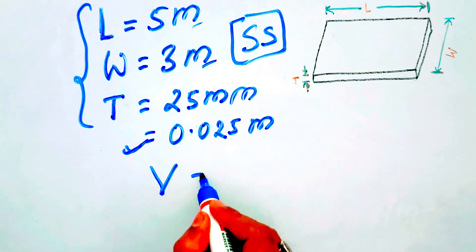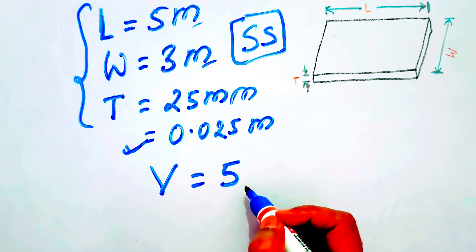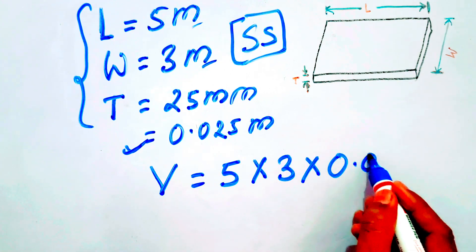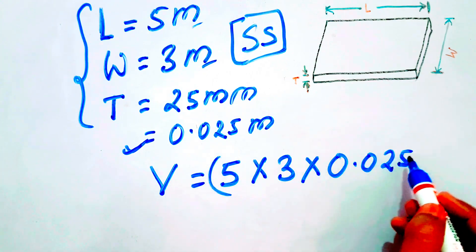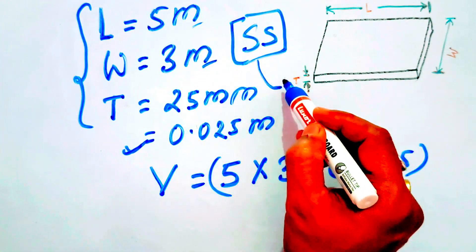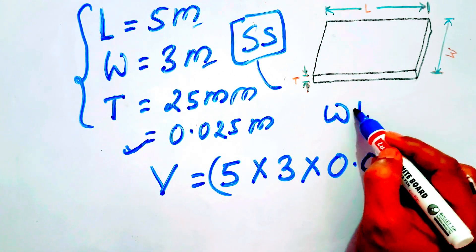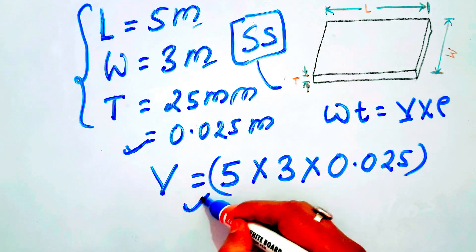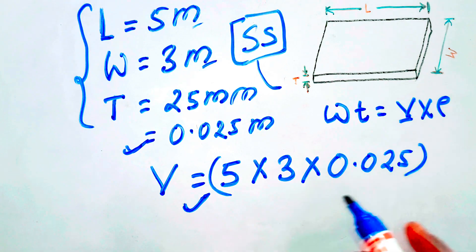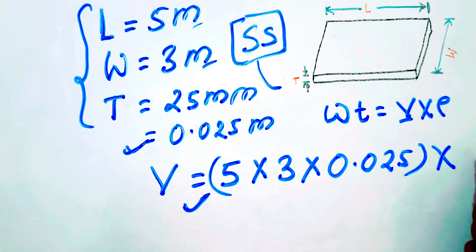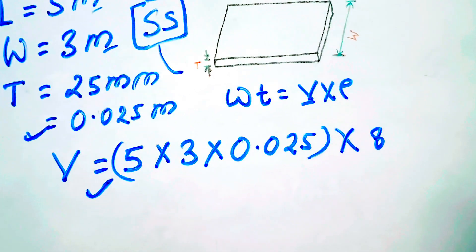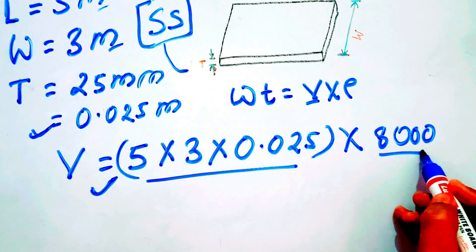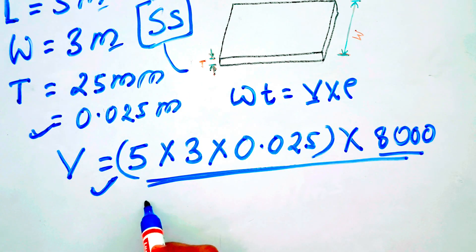The volume is length into width into thickness, so 5 into 3 into 0.025. After solving this you will get the volume. The material is stainless steel and the main formula for calculating weight is V into rho. Rho for stainless steel is 8000 kg/m³. After multiplying the volume by 8000 you will get the weight.